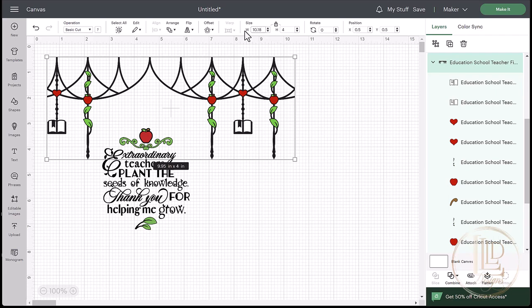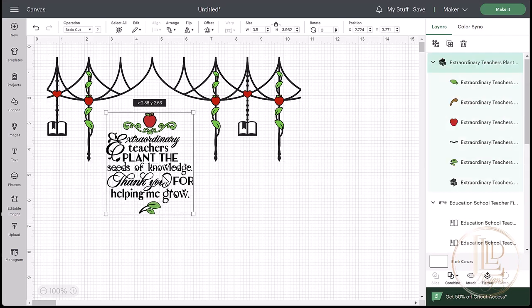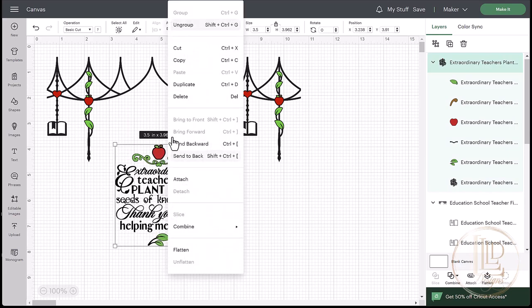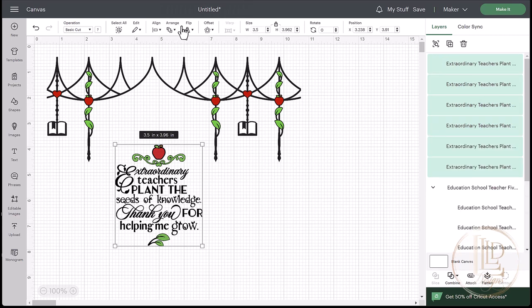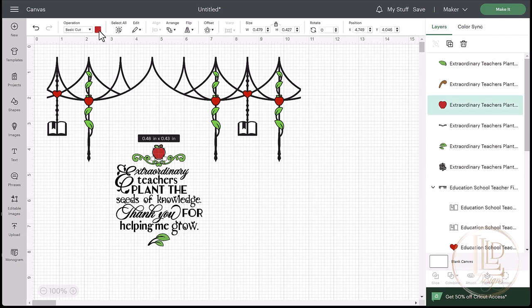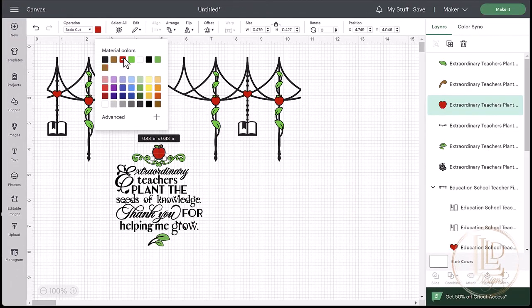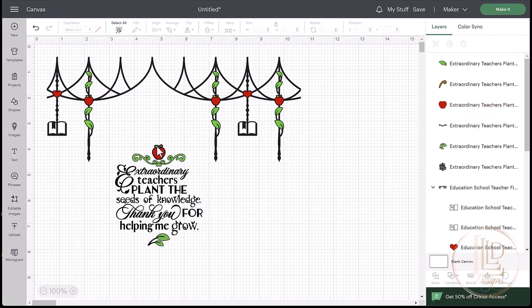To make sure the decals will cut with the same color vinyl, I am going to isolate the quote and ungroup it by right clicking it and selecting ungroup. Now I can select each individual color and recolor it to match the charm chain. With the apple selected, I click on the red box next to basic cut. This will show me all the material colors that will be used to cut the design. I choose the same red as the red on the charm chain, so these will now be cut from the same red and will be sorted onto the same cutting mat. I do this for each of my colors until I have no duplicate colors left.